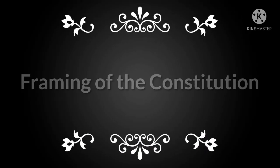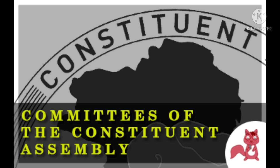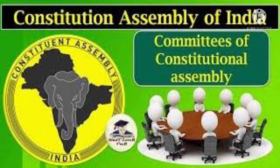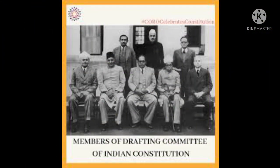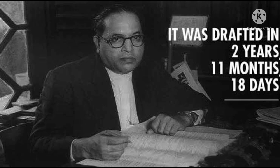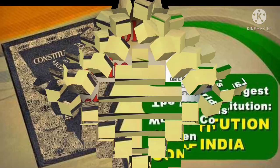The constituent assembly was supported by a number of committees to complete the task of framing the constitution. These committees were responsible for presenting reports on the basic issues faced by the people of the country. The committees presented their reports to the drafting committee, which was appointed by the constituent assembly under the leadership of B.R. Ambedkar. The drafting committee took 2 years, 11 months and 18 days to frame the constitution of India, which is considered to be the lengthiest written constitution in the world.